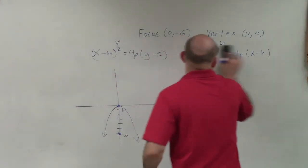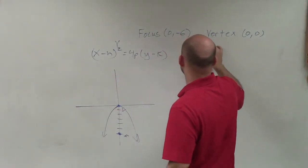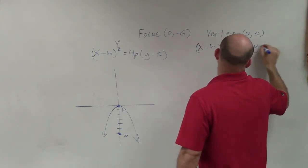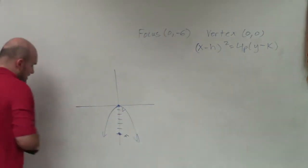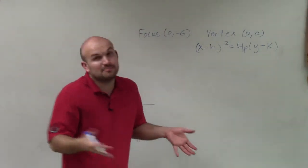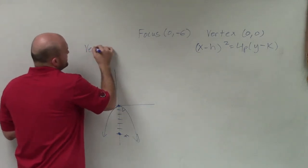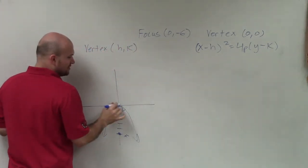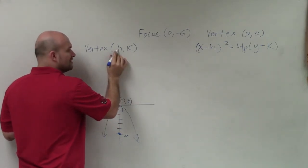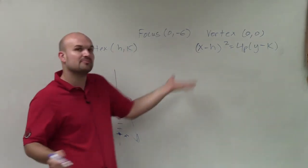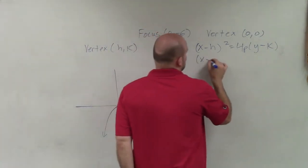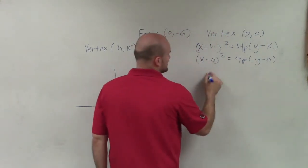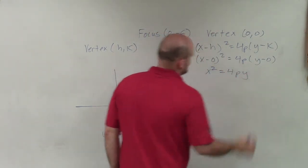I'm going to erase the horizontal one and write this over here so I can do my work. Now to write the standard form of the equation for this parabola, I need to plug in the information I know. Remember that the vertex is in the form (h, k). This point is (0, 0), where h = 0 and k = 0. Plugging them into my formula: (x - 0)² = 4p(y - 0), which is just x² = 4py.